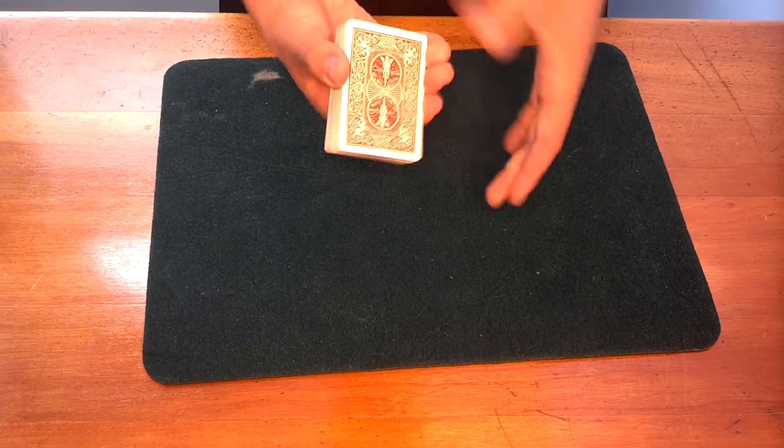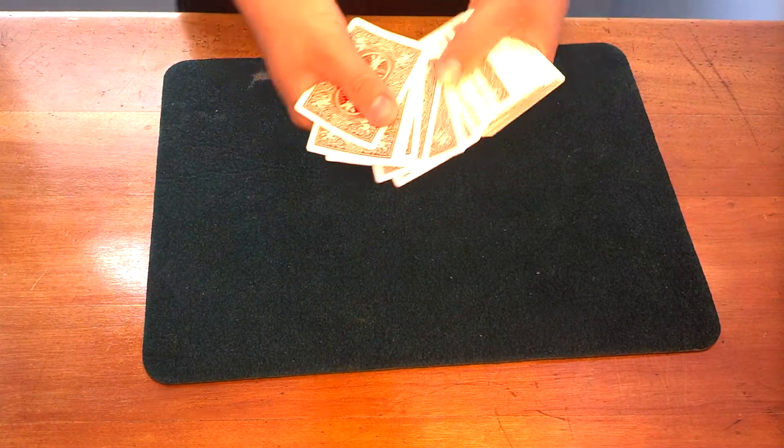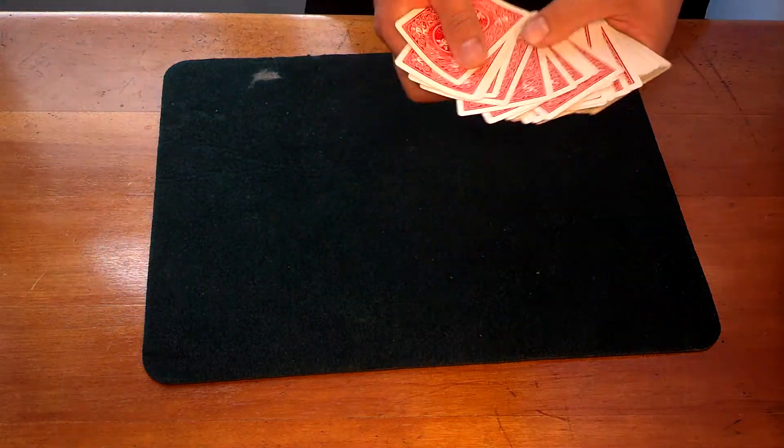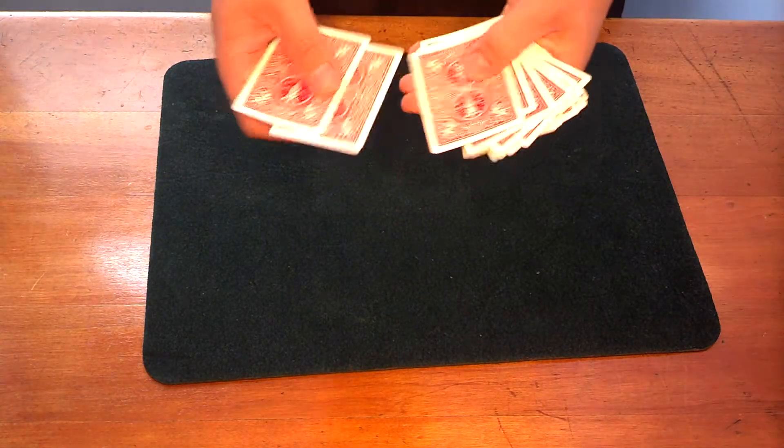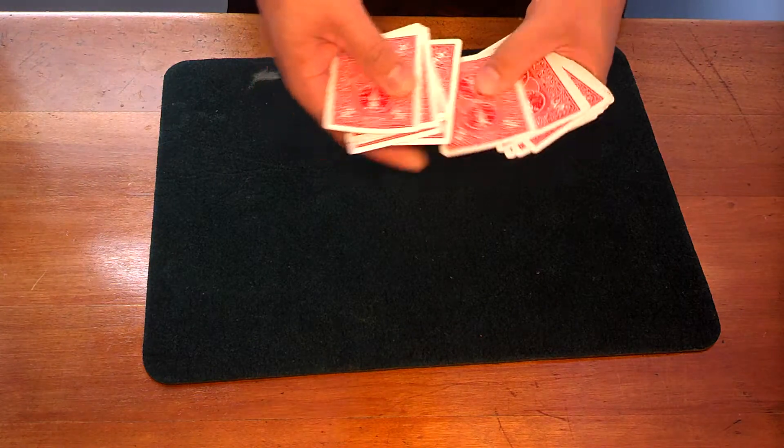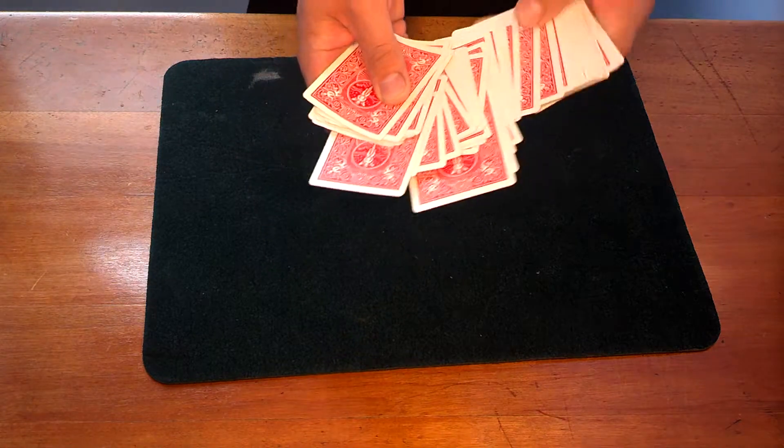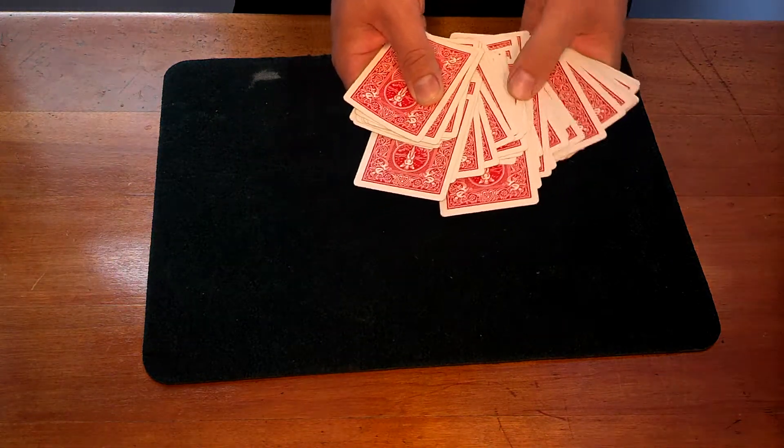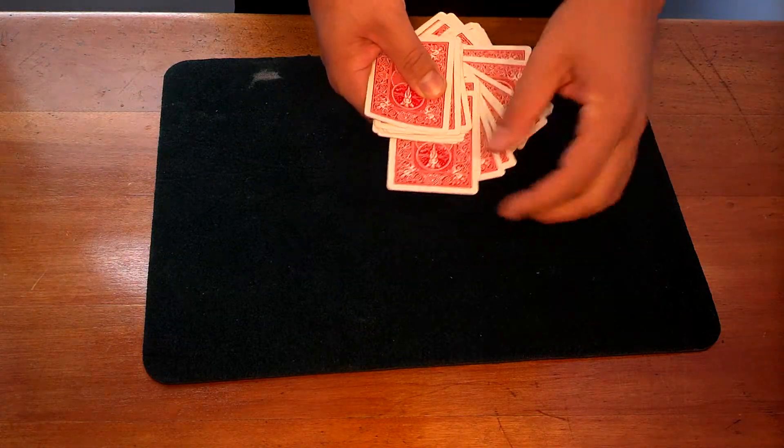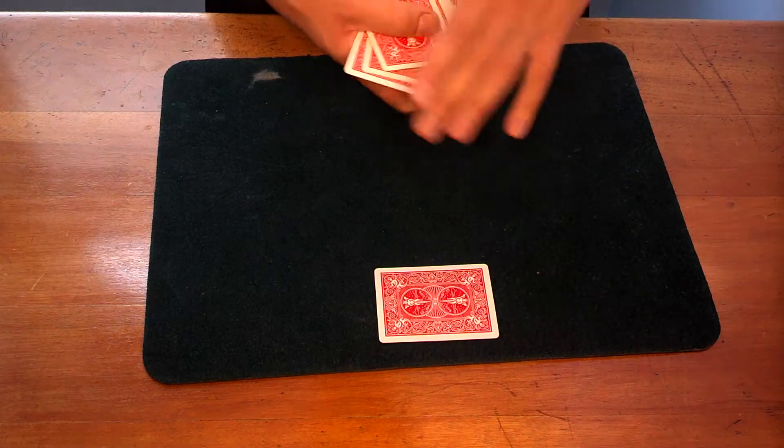Alright, so to start the trick you're going to fan out the cards and make your prediction, but in reality you're just keeping in mind where the tenth card is. One, two, three, four, five, six, seven, ten. So this right here, the tenth card is the eight. So we're just going to fan this out and make it seem like we're randomly picking a card, we're really just keeping our eye on that eight the whole time. So there's the eight. That's our prediction card.